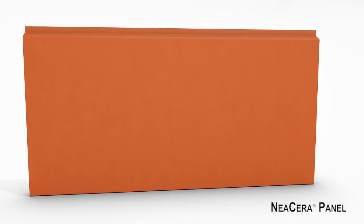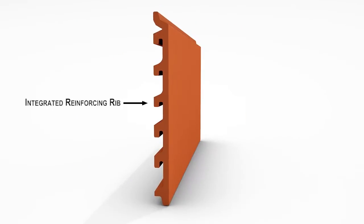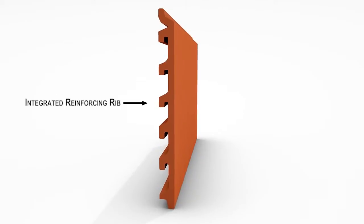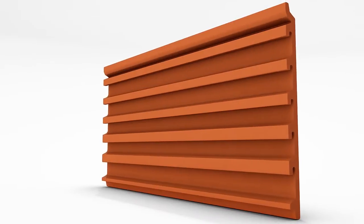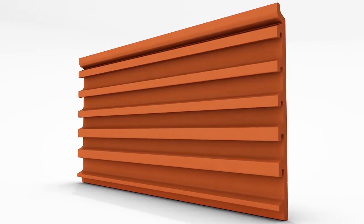All terracotta systems claim that they are easy to install, but only Neocera panels are produced with an integrated reinforced rib that also serves as the panel support. This is universal component number one.